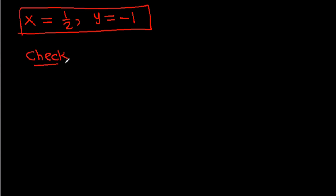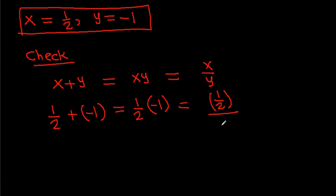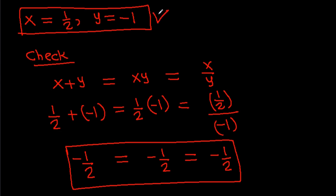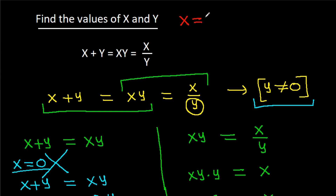We can also check the solution. With x equals 1/2 and y equals minus 1: x plus y equals 1/2 minus 1 equals minus 1/2, and x times y equals 1/2 times minus 1 equals minus 1/2. Also, x divided by y equals (1/2) divided by (minus 1) equals minus 1/2. All three expressions are equal, confirming x equals 1/2 and y equals minus 1.